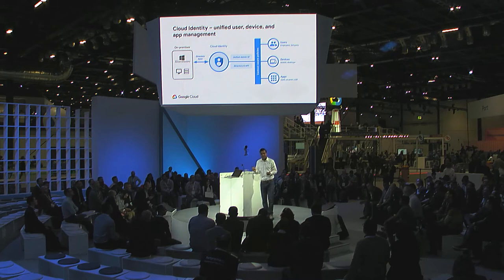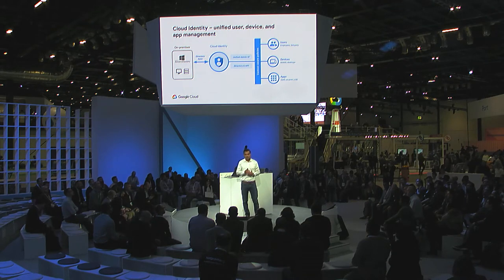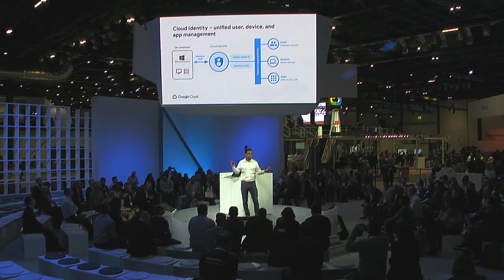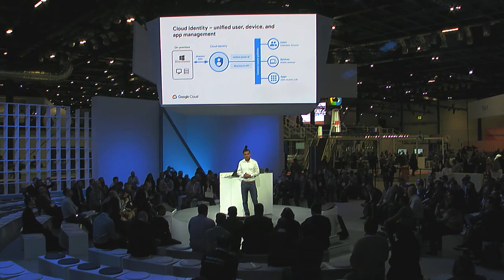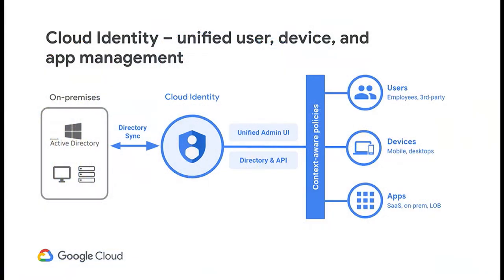Cloud Identity is based on the foundation of the BeyondCorp security model that Google pioneered. It helps unify your users, devices, and applications all in one place. It enables and accelerates cloud-centric applications, but it also helps meet you where you are with your on-prem IAM systems and applications.